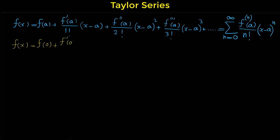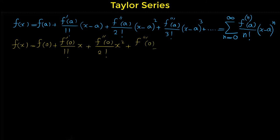The next term is f prime of 0 over 1 factorial, and instead of x minus 0 we can write only x because x minus 0 is x. The next term is f double prime at 0 over 2 factorial times x squared, and the next term is f triple prime at 0 over 3 factorial times x to the 3, and so on.